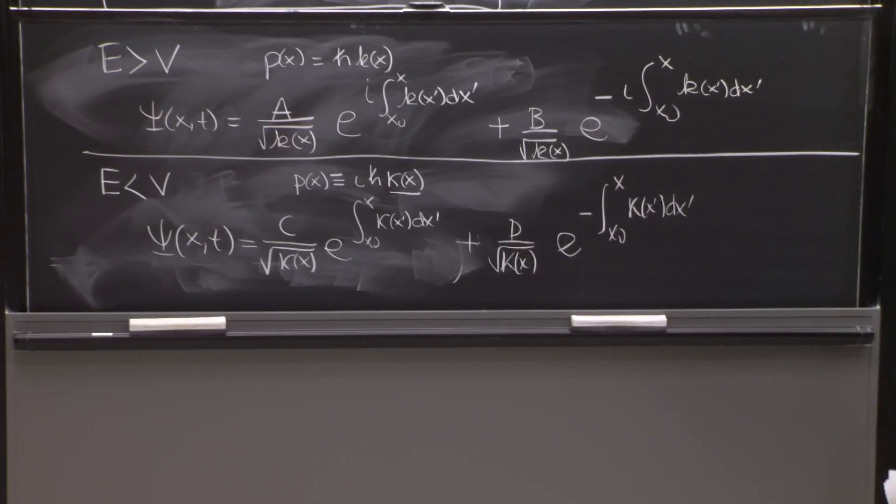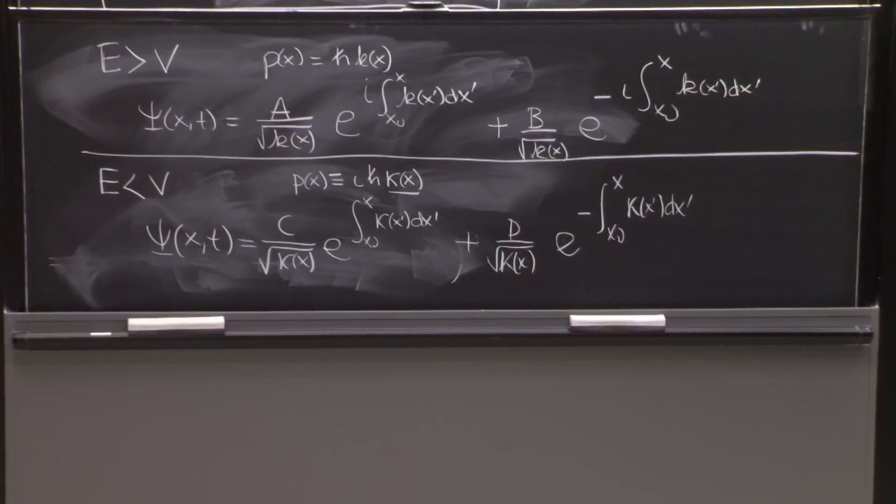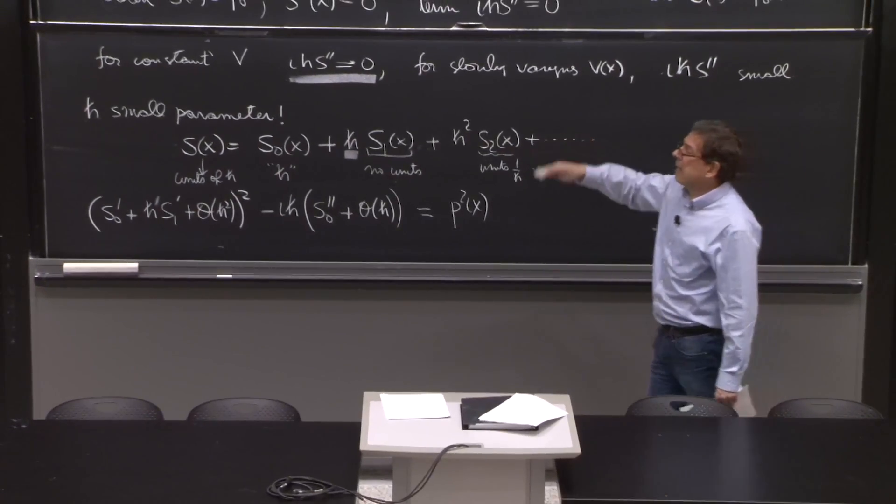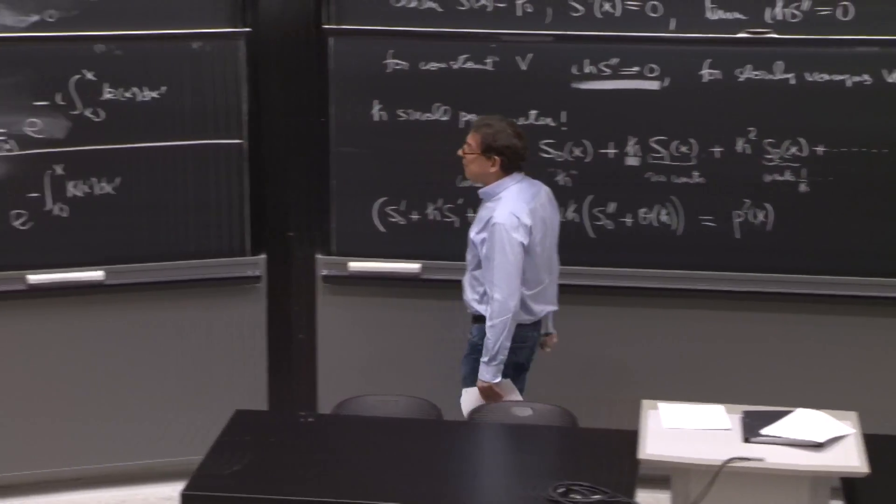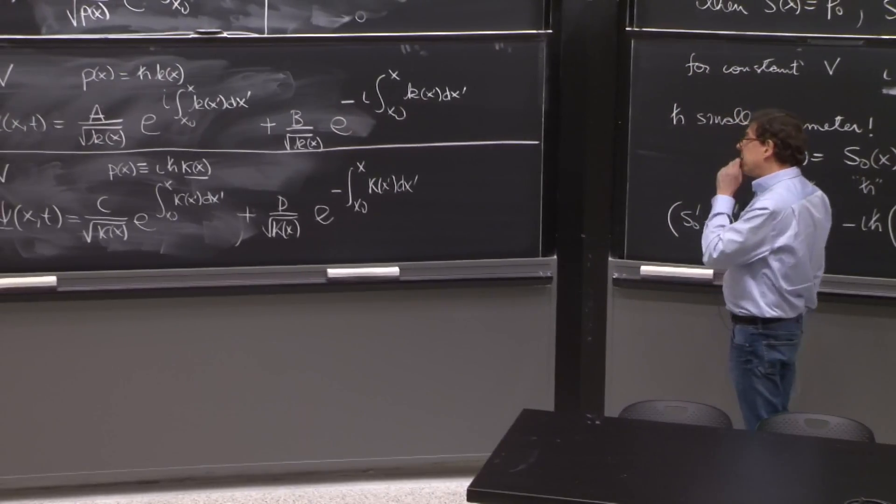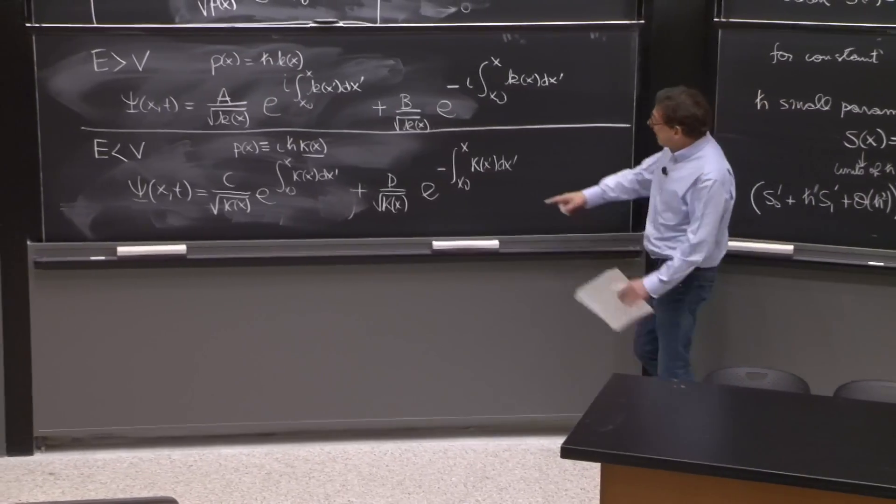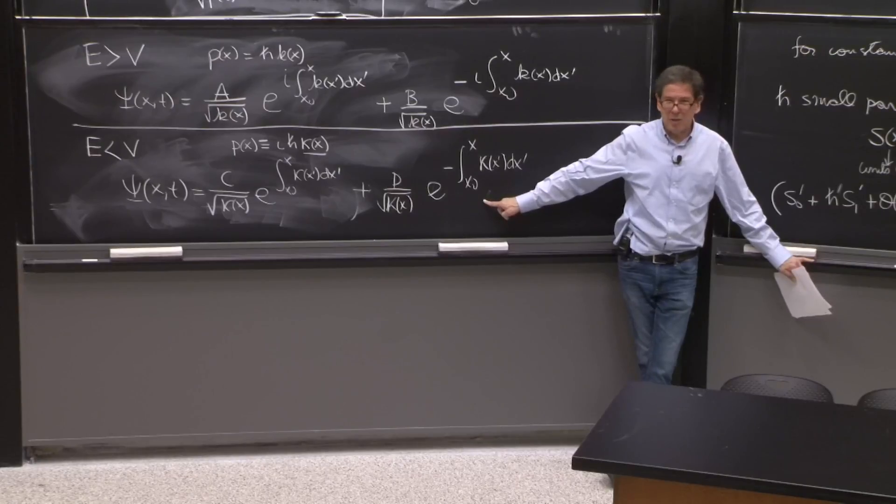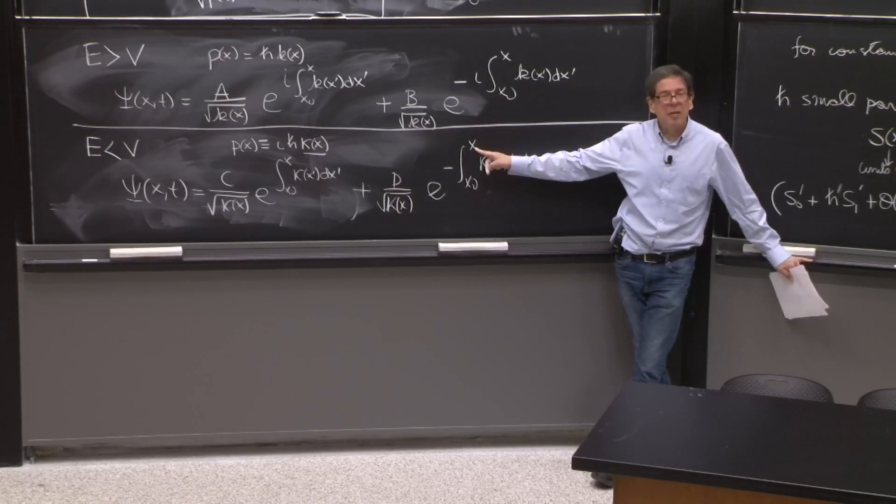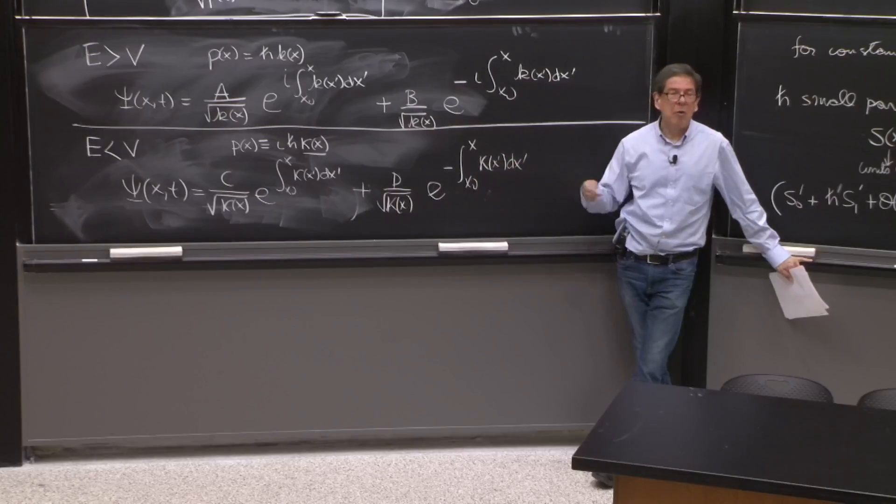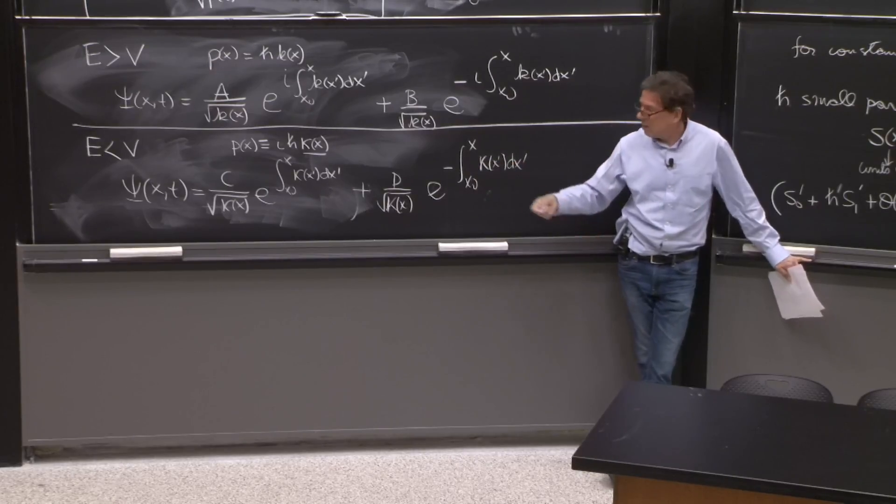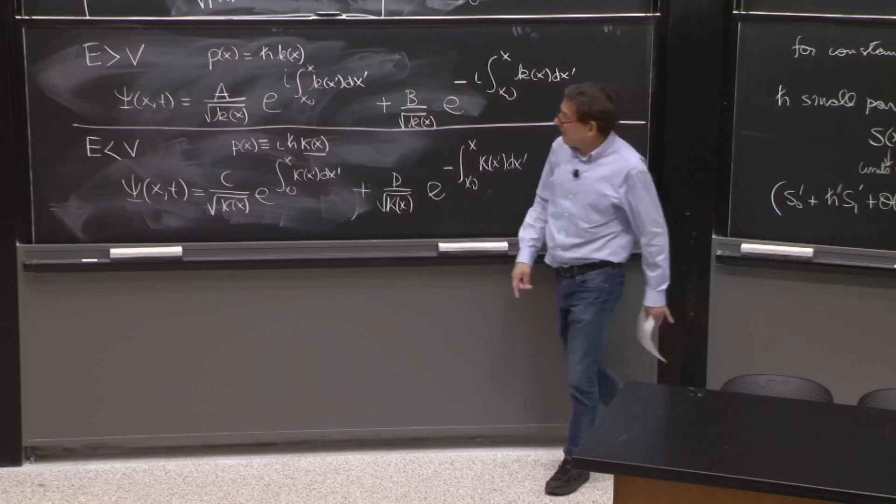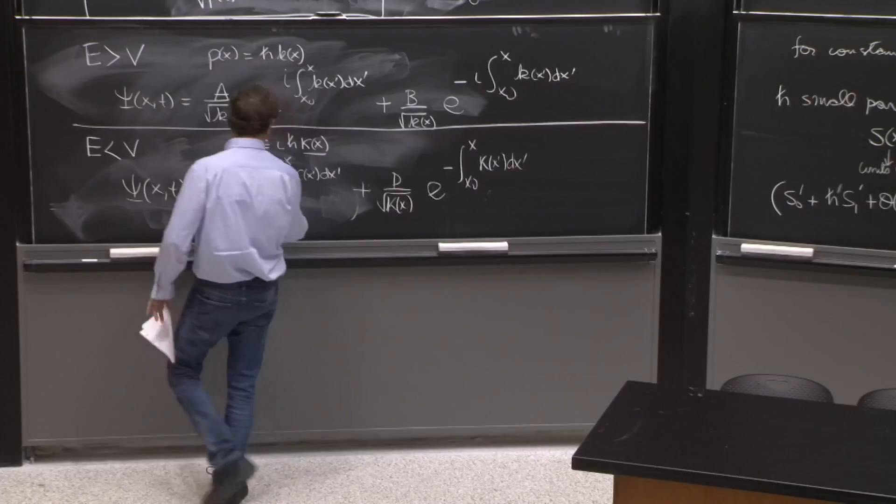So this is the complete solution of WKB. If you are in the classically allowed region, top, or in the classically forbidden region. It's important to realize that this function, this second term, is the decaying exponential. As x increases, the integral accumulates more and more value, and the wave function gets more and more suppressed. This is a growing kind of exponential.